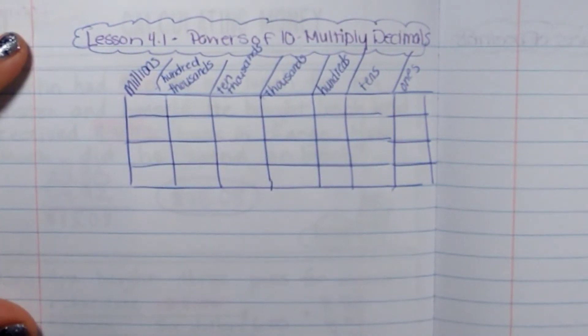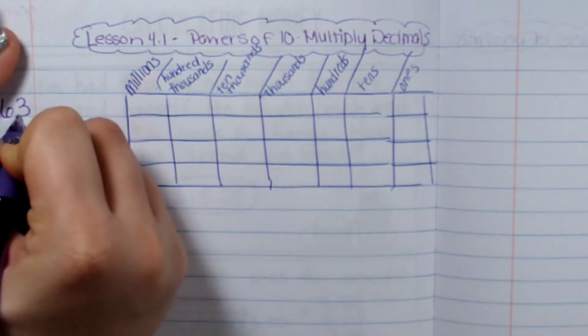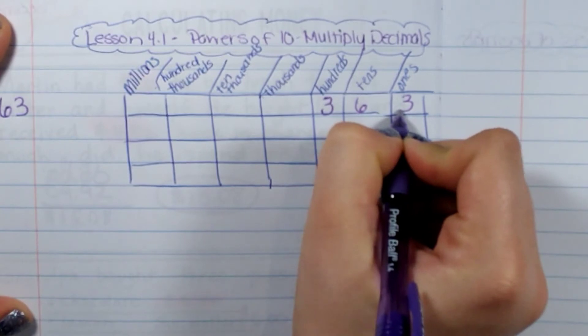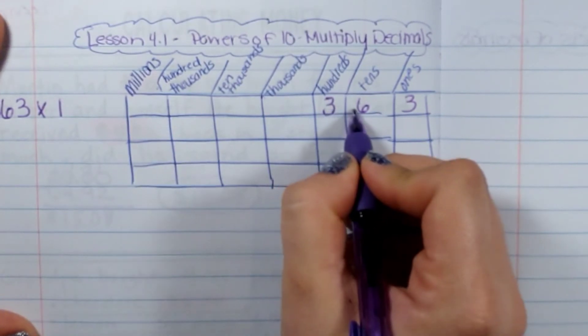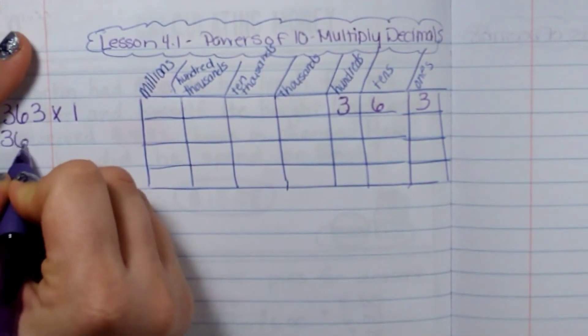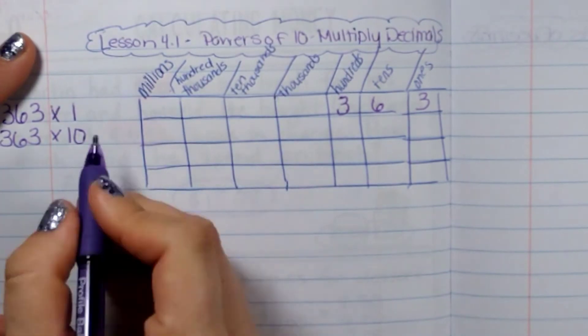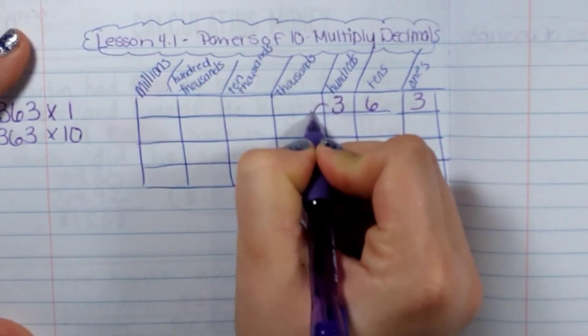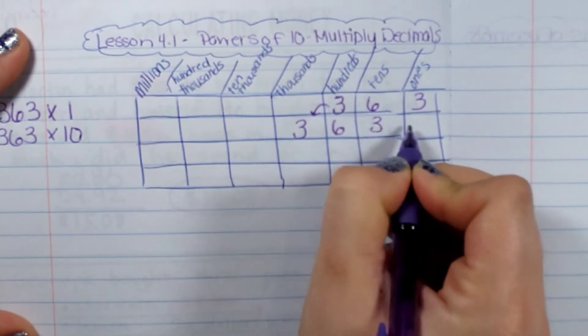So if I have a number that is three hundred and sixty-three, the way I would write it is three hundred and sixty-three. If I was to multiply that by one, I would have three hundred and sixty-three because any number times one is itself. Now, if I was to multiply this by ten or also known as ten to the first power, what I would do is move it over one decimal place. So it would actually be three thousand six hundred and thirty.